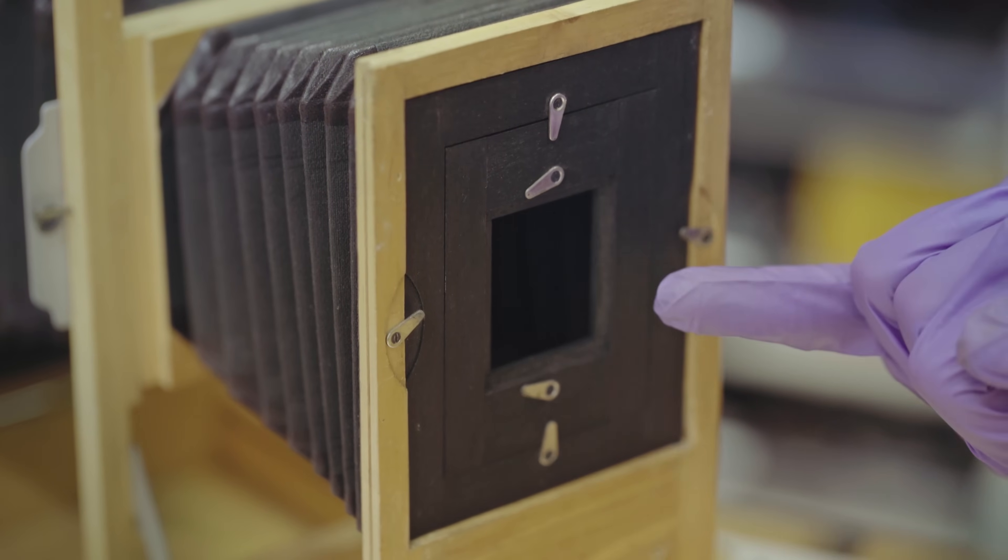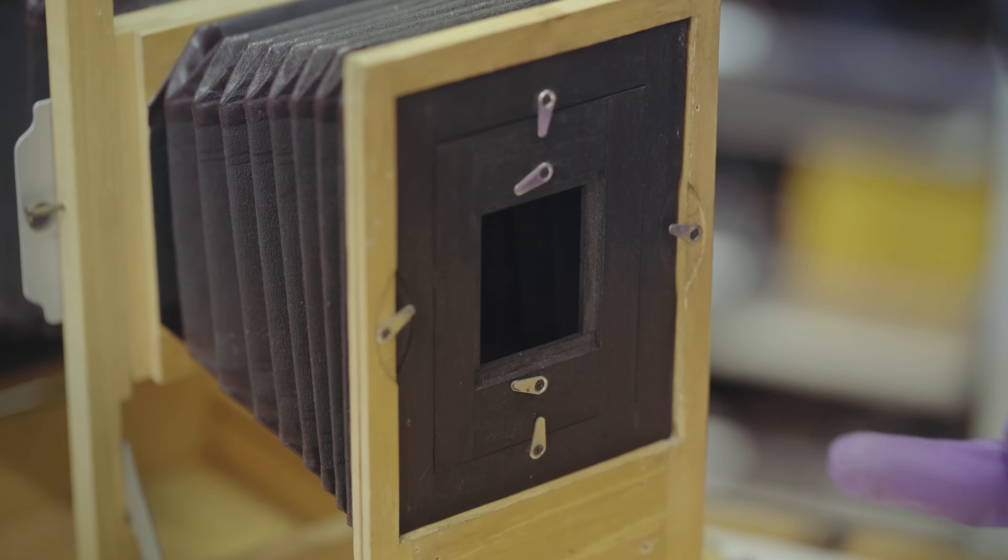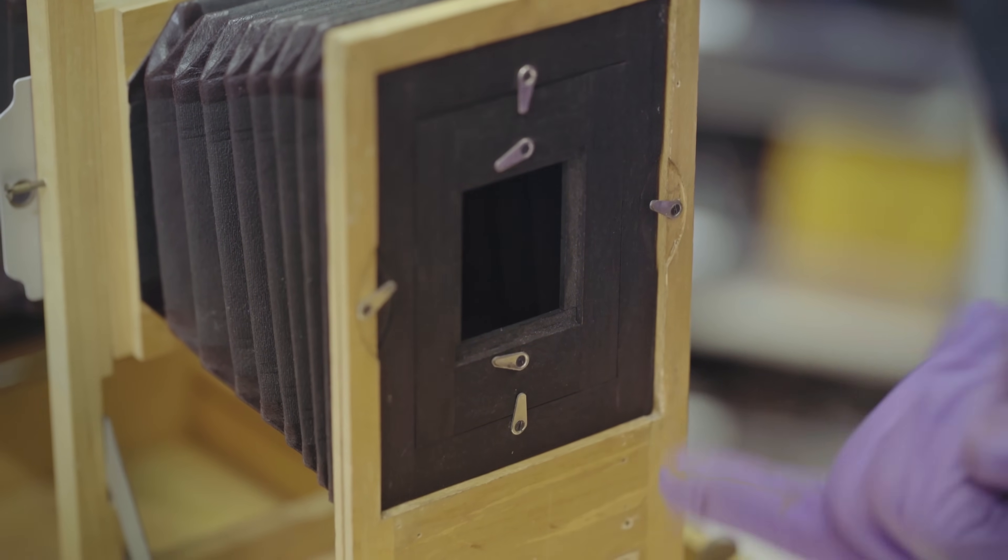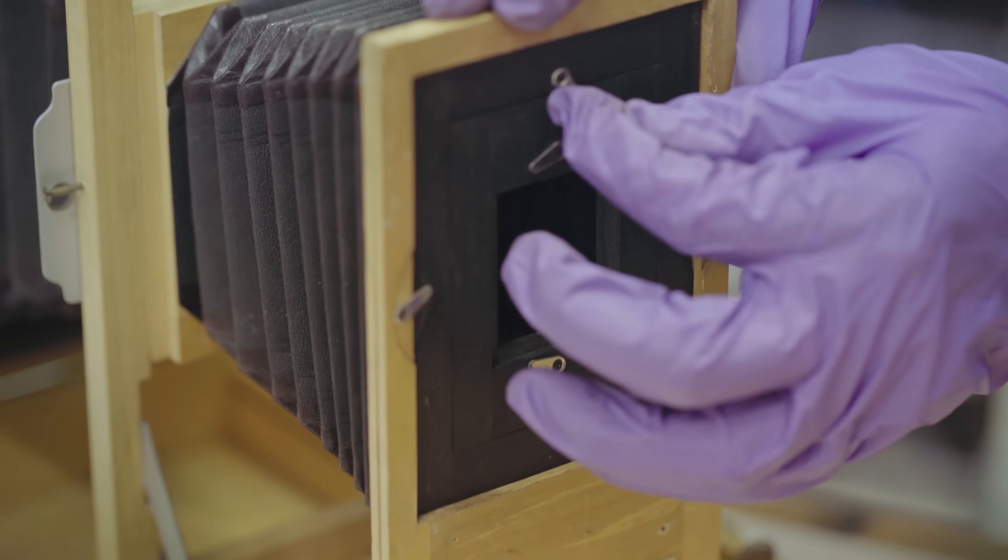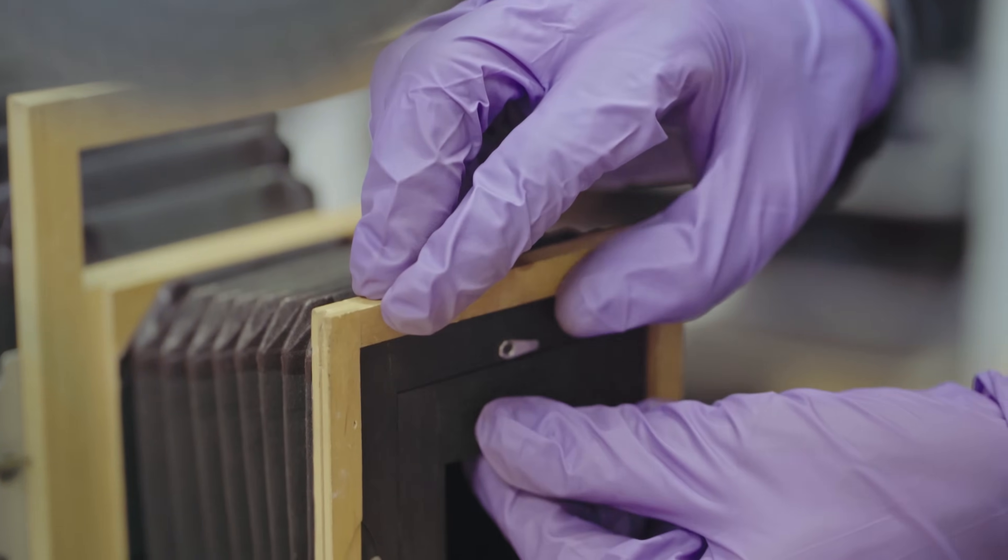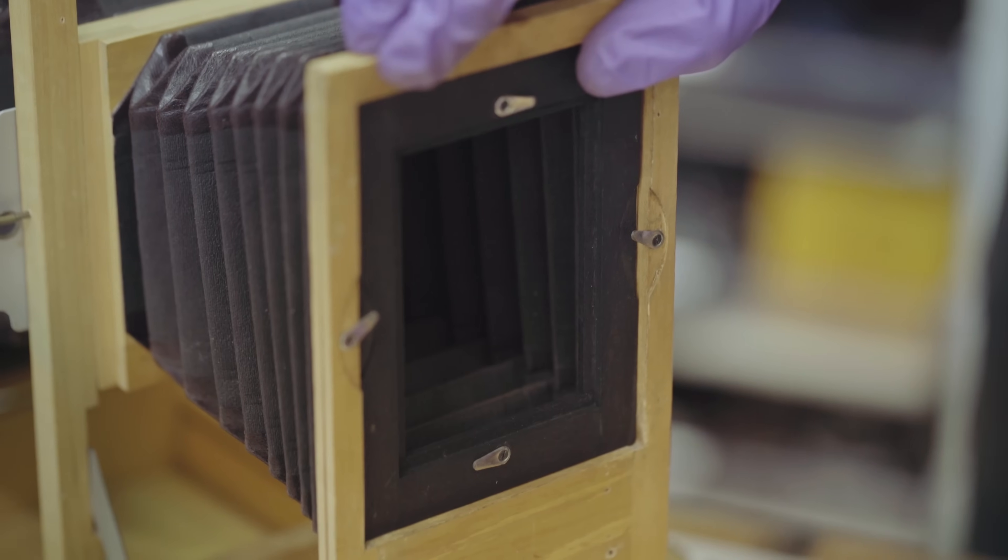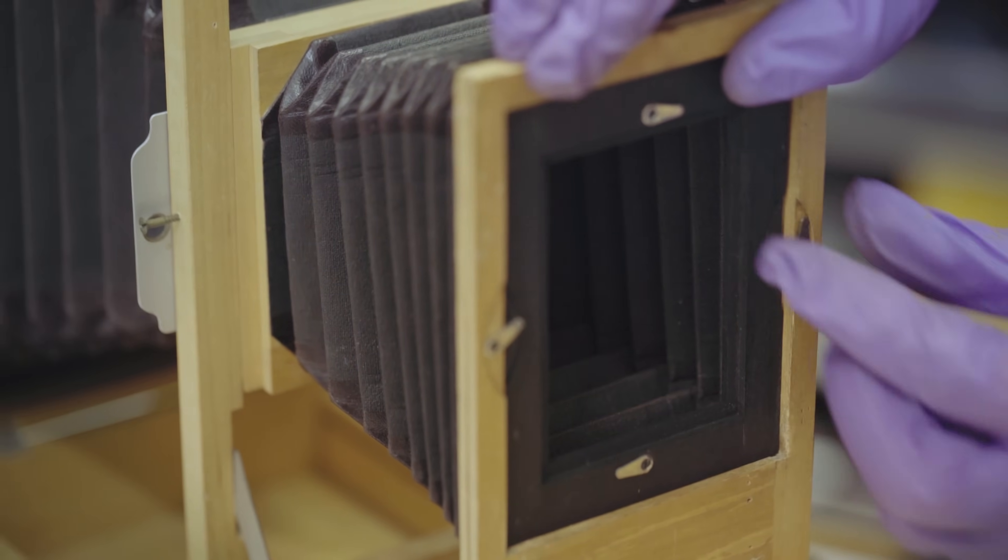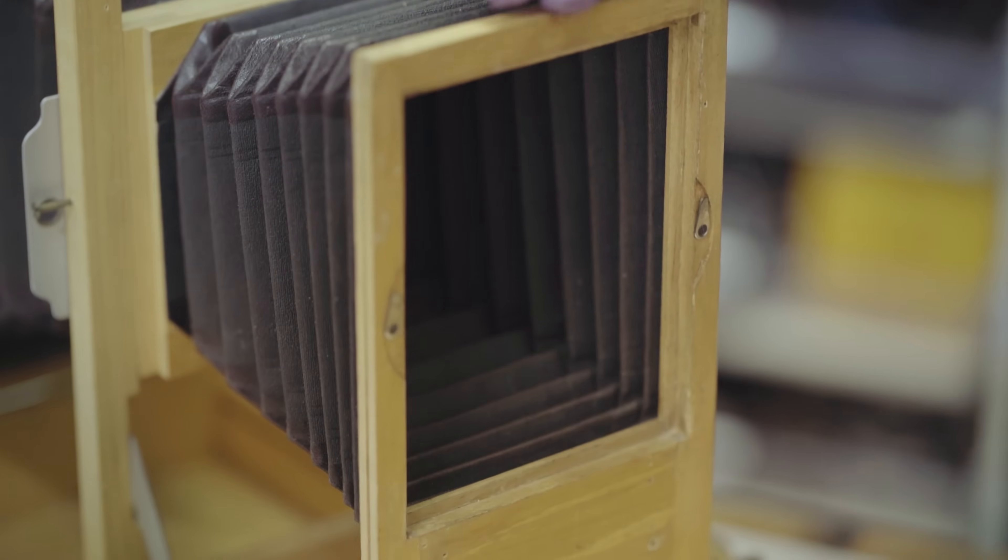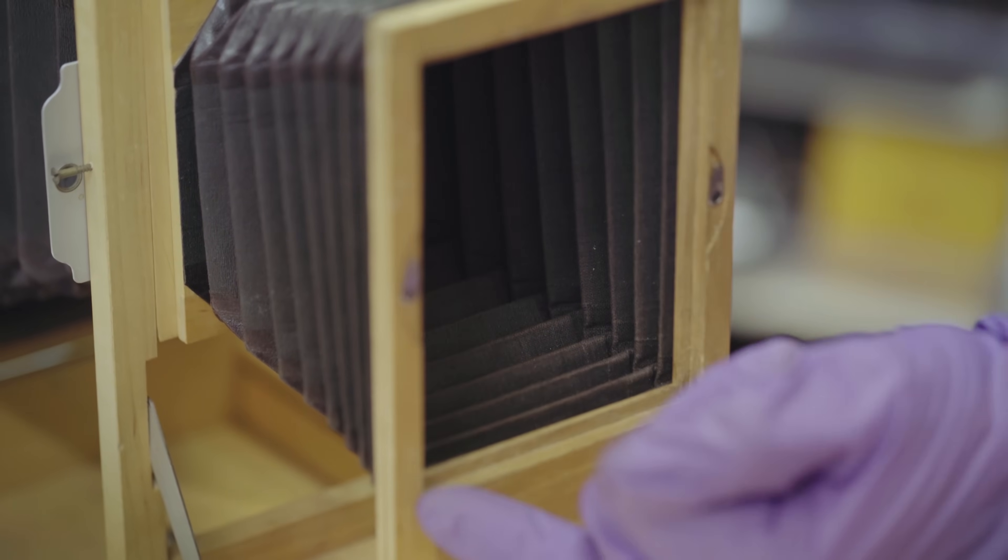This side of the enlarger is where you would place your photographic negative. As you can see, there are various cutouts for different sizes of negative. And these can be removed, allowing a larger negative to be developed.